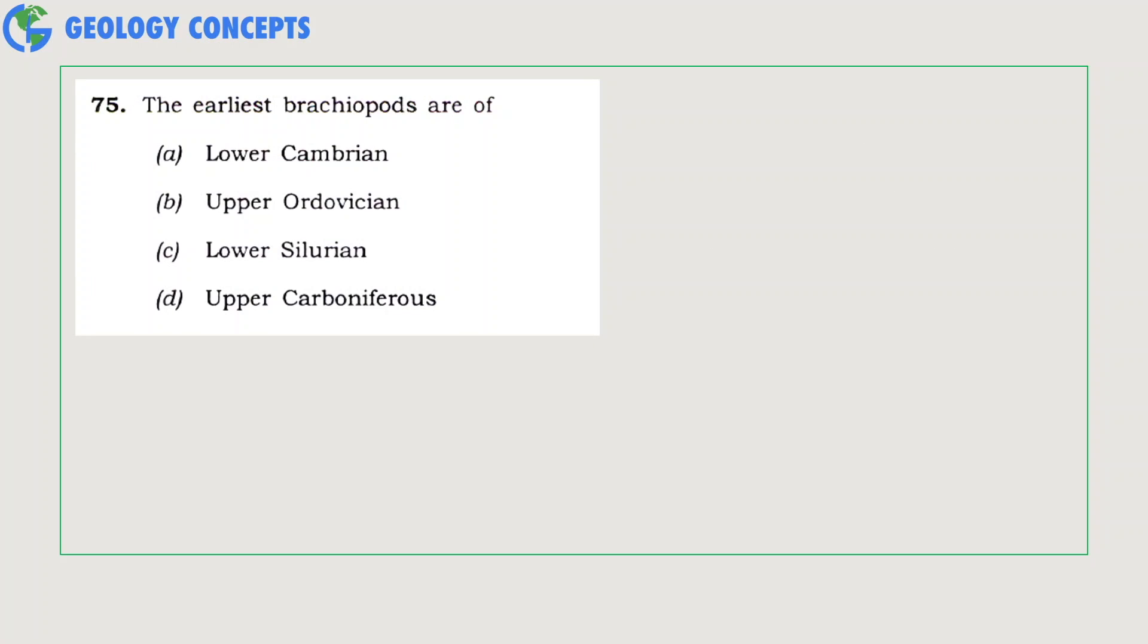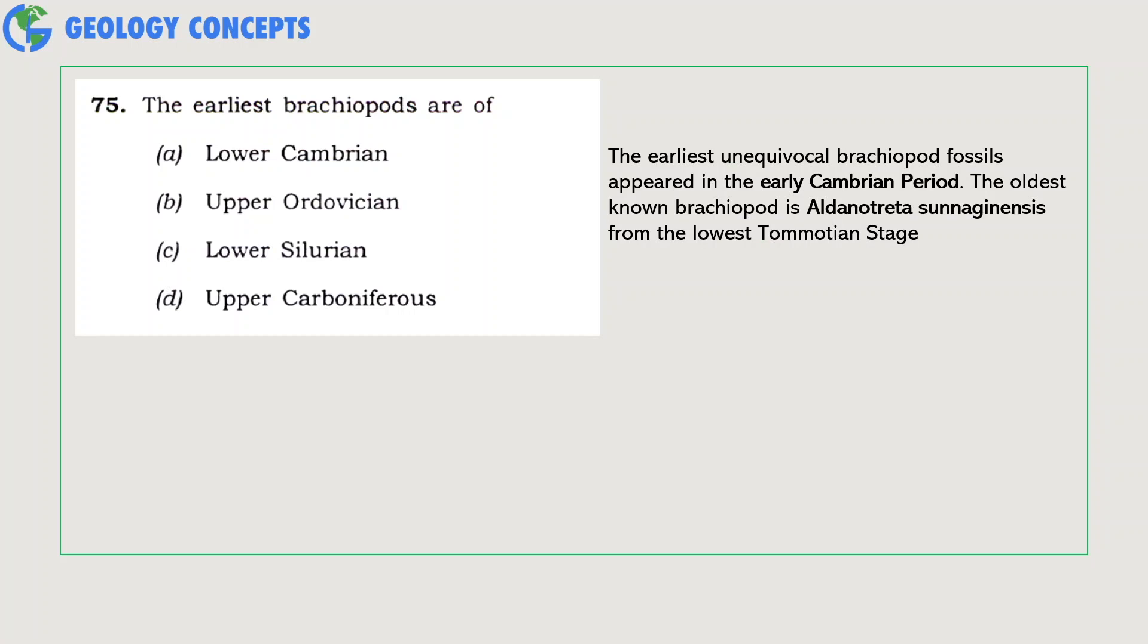The earliest brachiopods are of which age: Lower Cambrian, Upper Ordovician, Lower Silurian, or Upper Carboniferous? The earliest brachiopod fossils appeared in the early Cambrian period, that is the Lower Cambrian period. The oldest known brachiopod is Aldanotreta sunnaginensis from the lowest Tommotian age. So option A, Lower Cambrian, is the correct answer.